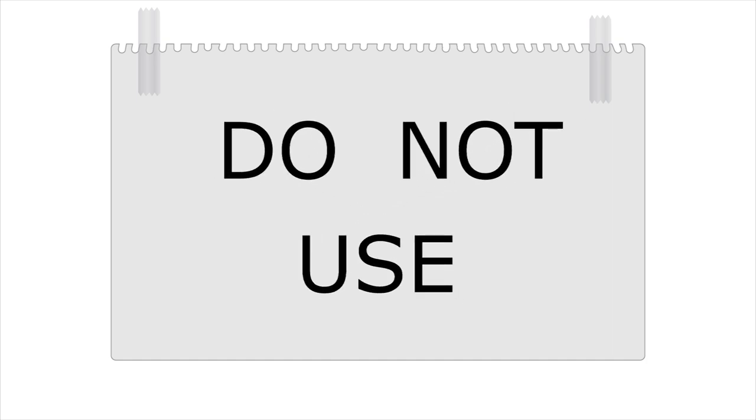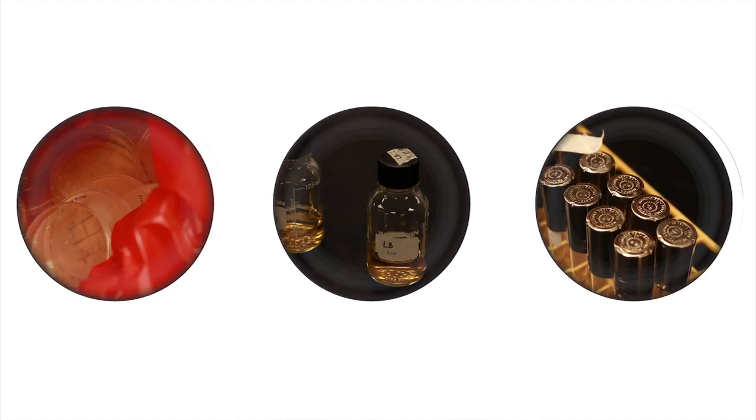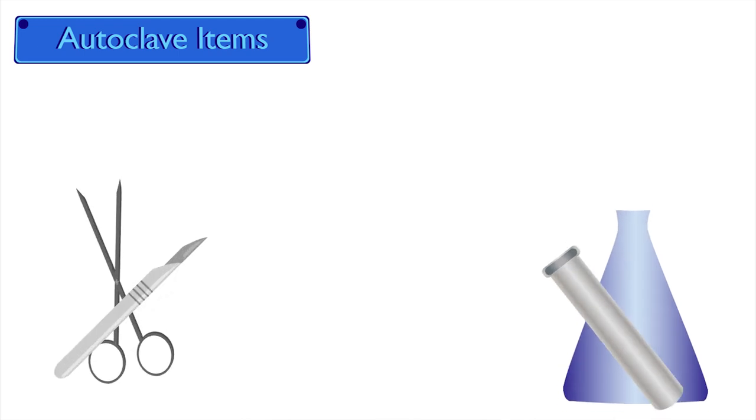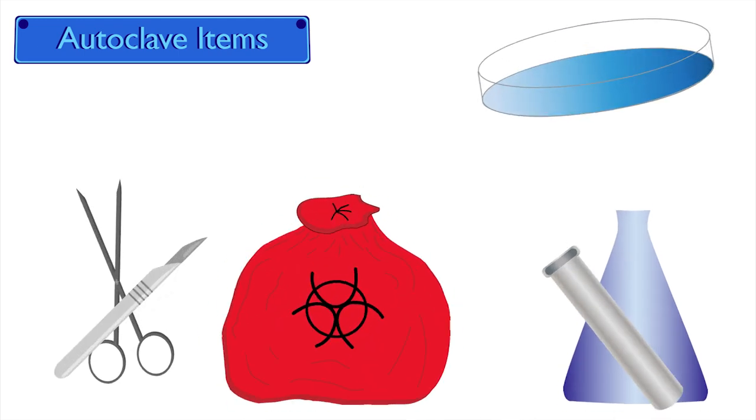You should also post a sign on the autoclave that states, Do not use, to ensure no one else uses the autoclave until the unit is working properly. Second, prepare materials. Typical items that can be put into an autoclave include glassware, dry items or instruments, solutions and media, and biological or potentially biohazardous materials.